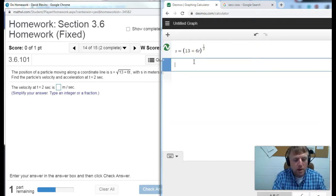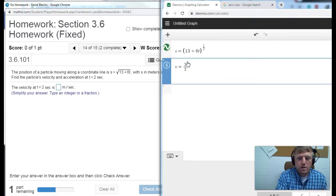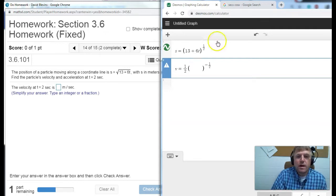Alright now velocity. Velocity is the derivative of this. So I've got something to the 1 half power. I need to do the power rule. So how does the power rule work? I'll bring down the power. Alright something and now I subtract 1 from the 1 half. So 1 half minus 1 is negative 1 half. Negative 1 half is the new power. Now that's how the power rule works. We bring the power down. We subtract 1.